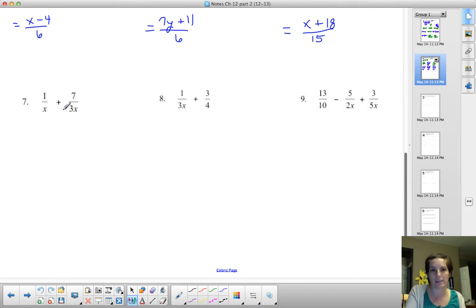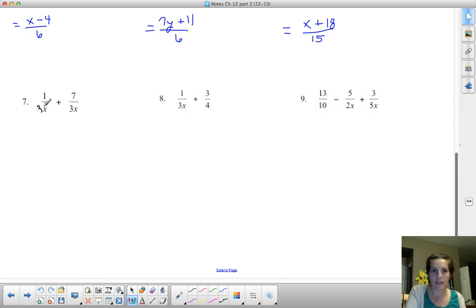So how would I make a common denominator or how would I make 3x and x match? Well, if I simply took x and I multiplied it by 3, then I would have 3x.